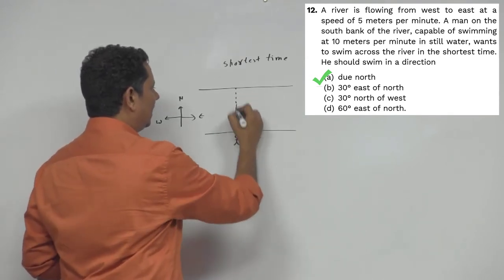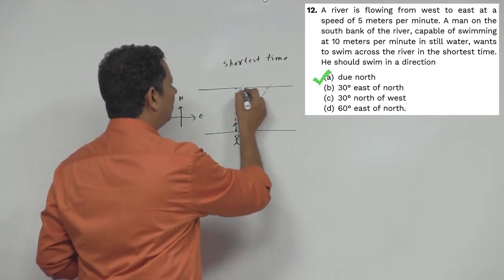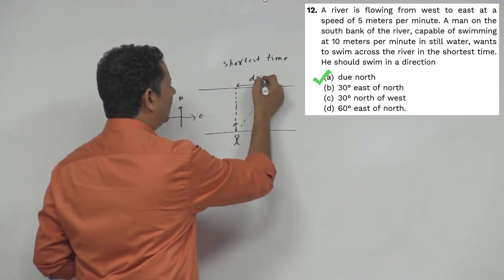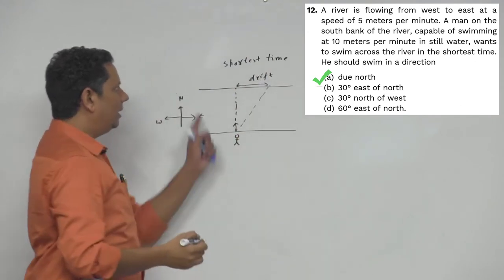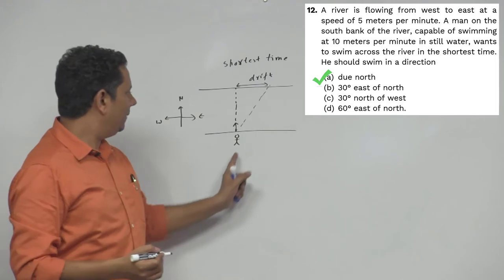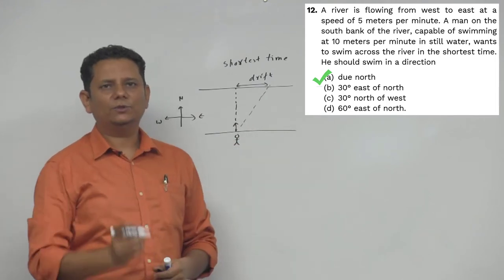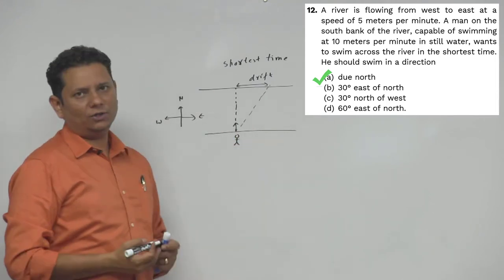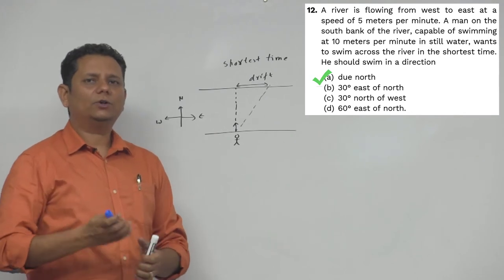So this person wants to cross in the shortest time. The water is flowing in this direction.